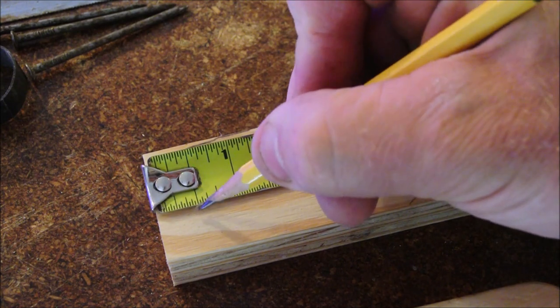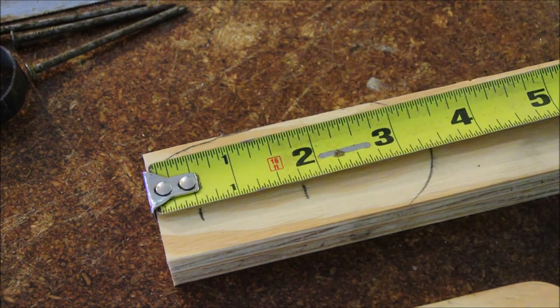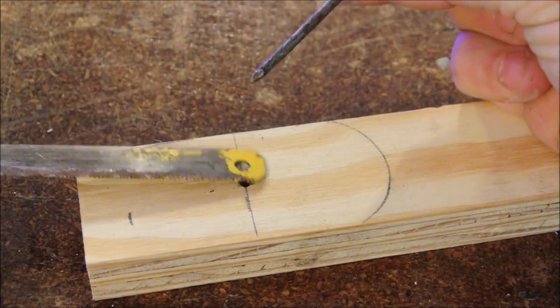For the nails, mark one half inch and one and three quarters. Mark center and drill this hole. That was an eighth inch bit.